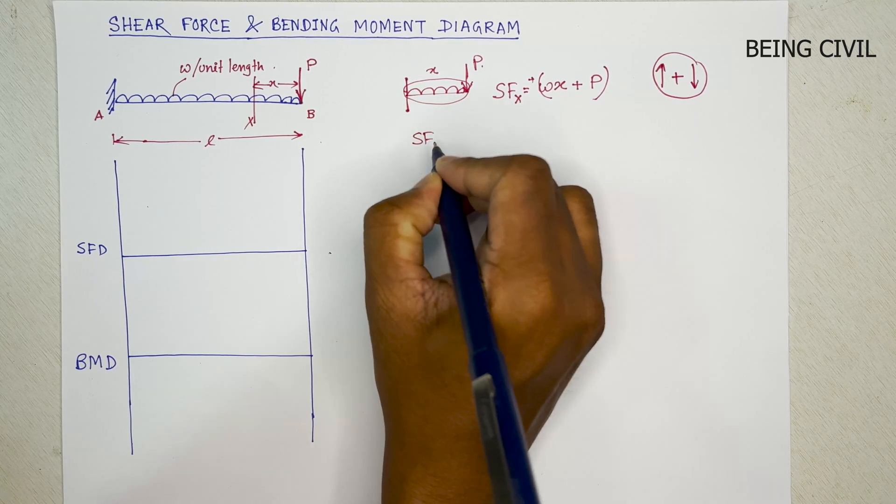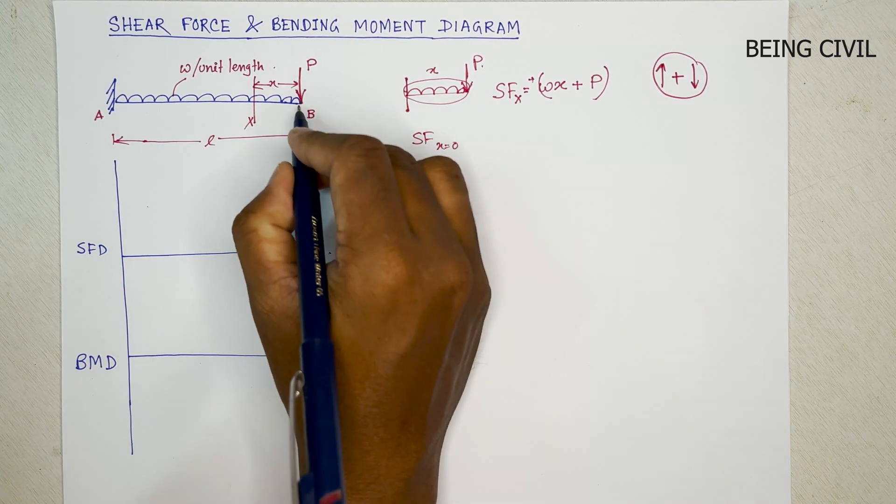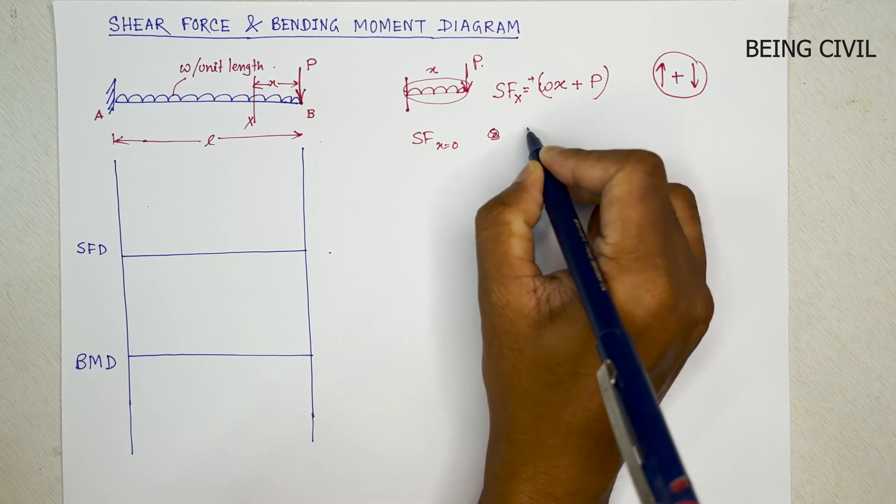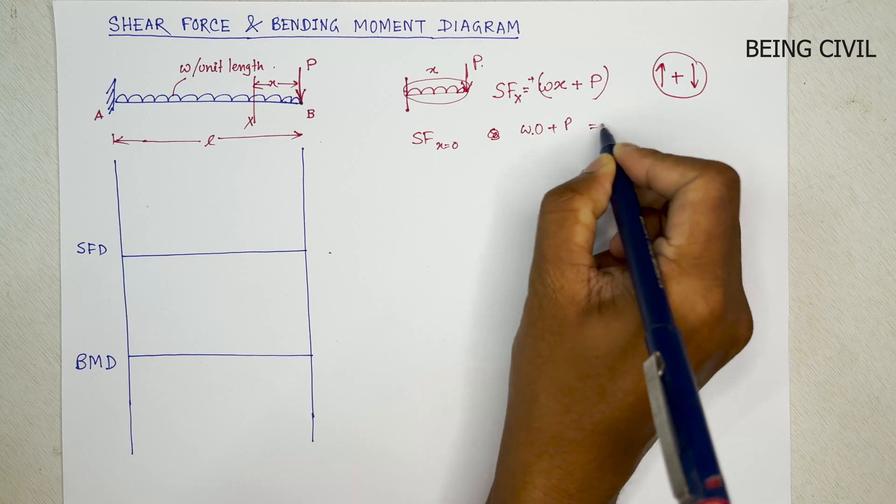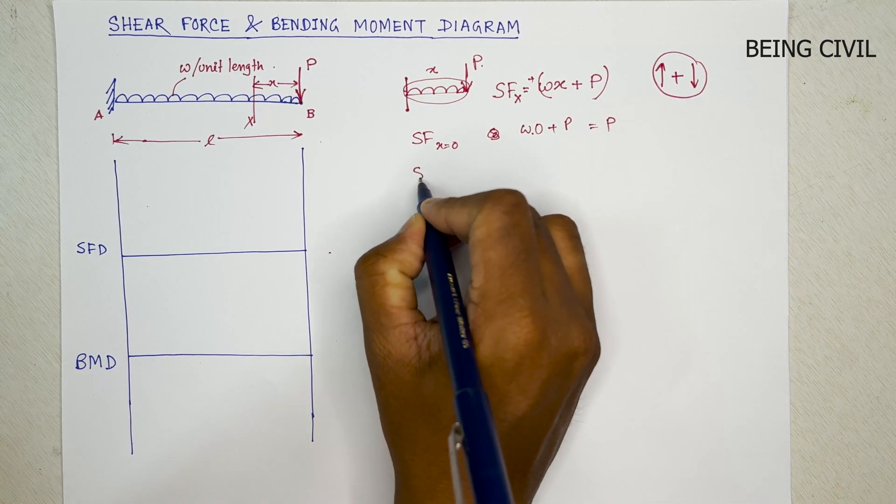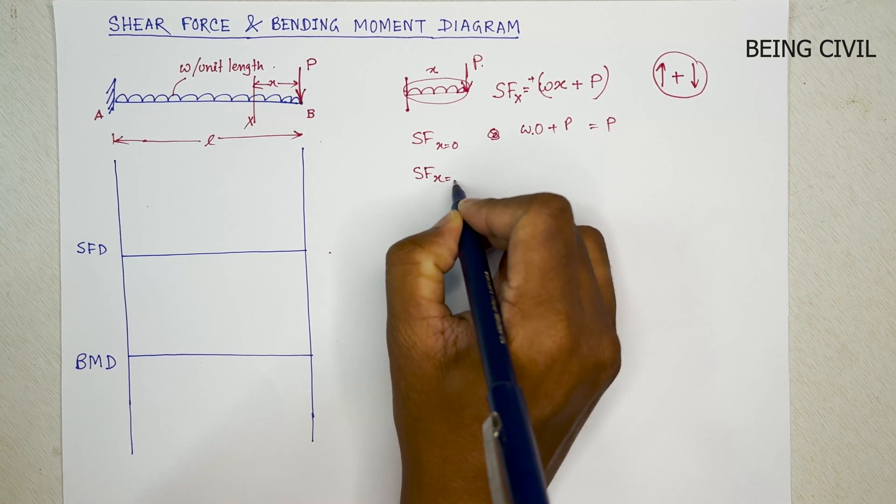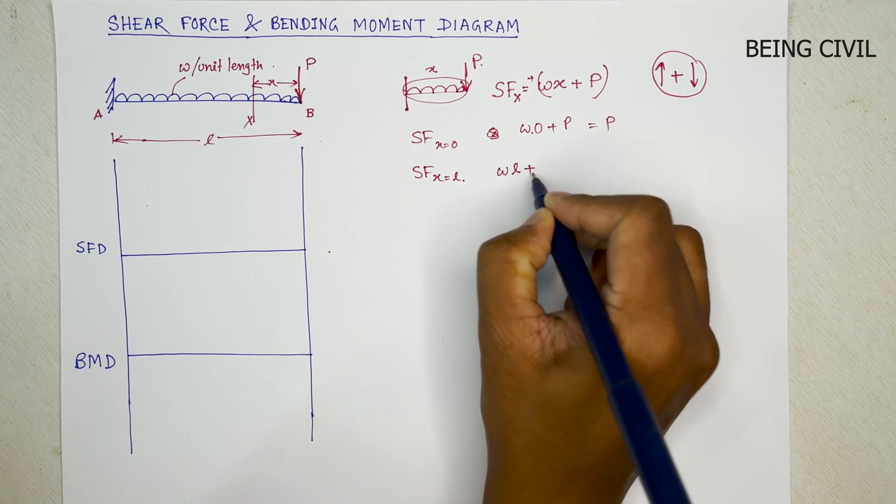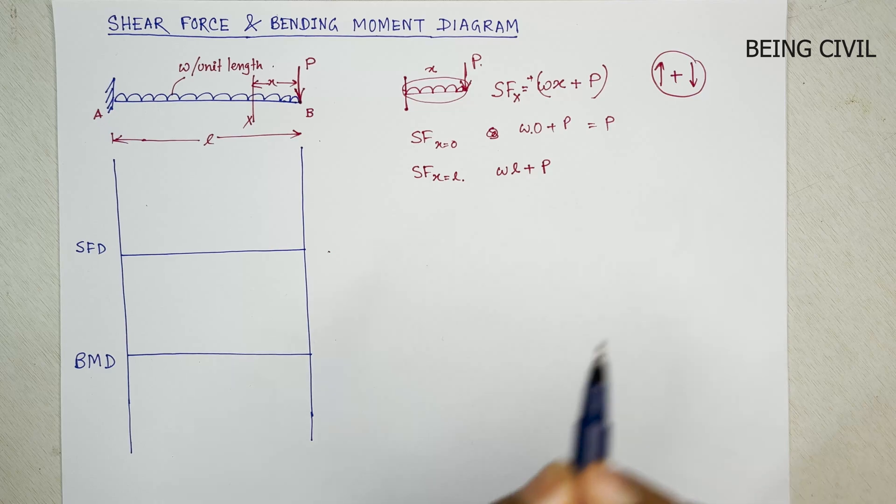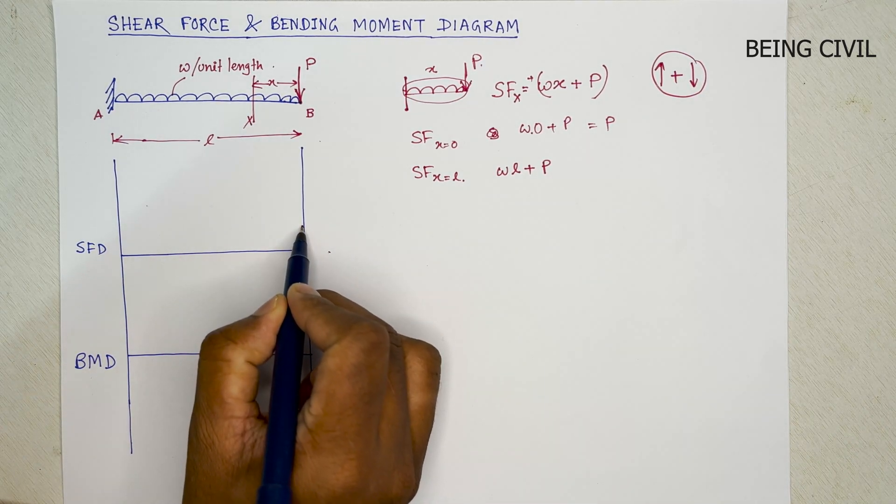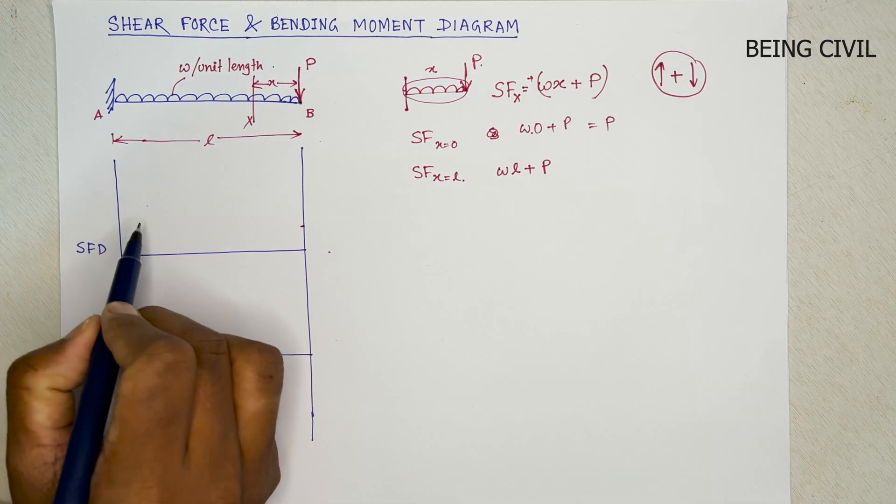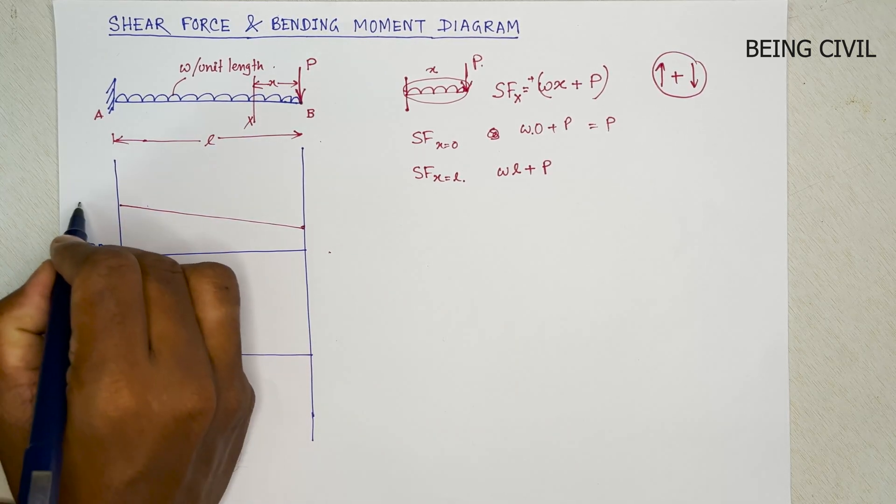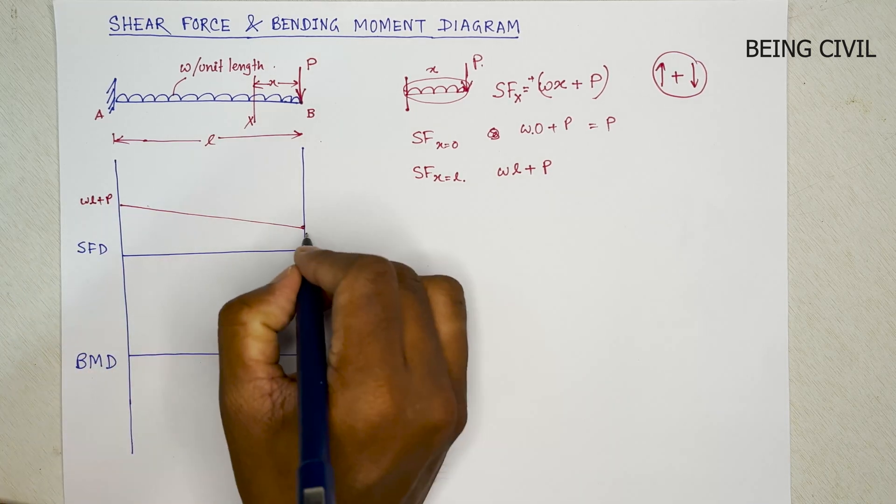Now SF at X equal to 0, that is the free end, is W into 0 plus P, so equals to P. And at the fixed end where X equal to L will be W into L plus P. So the shear force diagram will start here at P and will linearly vary and go to WL plus P at the fixed end.